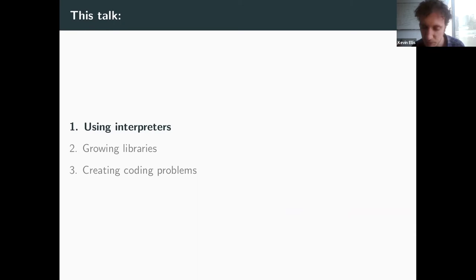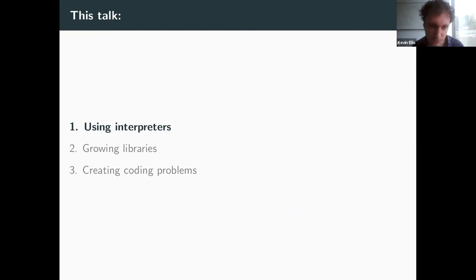Instead, what humans do is a laundry list of activities. They learn from textbooks and make up their own programming problems. They come up with libraries for encapsulating routines that span multiple problems, often by refactoring their code — not just to be more reusable, but more efficient and interpretable. They program interactively with interpreters, debuggers, and profilers, going back and forth between program execution and program writing. In this talk, I'll discuss work on reinterpreting these insights as ways of doing program synthesis — using interpreters, building libraries, and coming up with new programming problems.